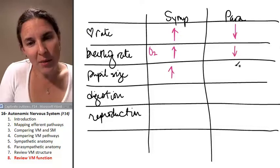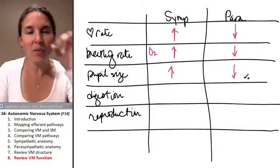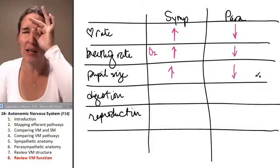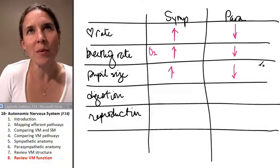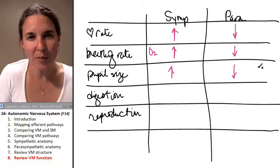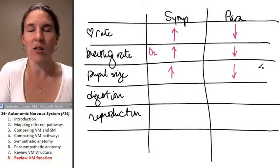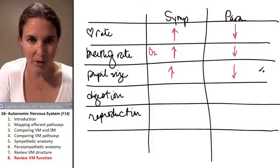And if you're in parasympathetic land, you can relax. You can have nice tiny little pupils. I actually don't know why that would be beneficial to have tiny pupils. Maybe it just means that you're more relaxed. You're not going to be quite as alert to all of the light around you.